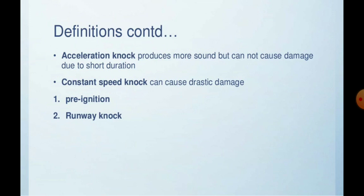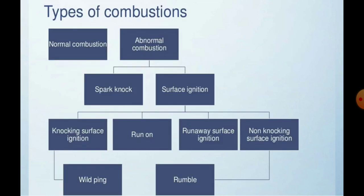To avoid knocking, or to reduce it to a moderate level, these phenomena are grouped into two categories: pre-ignition and runaway knock. Various types of combustion can be plotted — normal combustion and abnormal combustion. Abnormal combustion is further separated into spark knock and surface ignition. Surface ignition is divided into four types: knocking surface ignition, run-on, and runaway surface ignition. The last category is further divided into rumble and wild ping, which we will cover in the next topic.